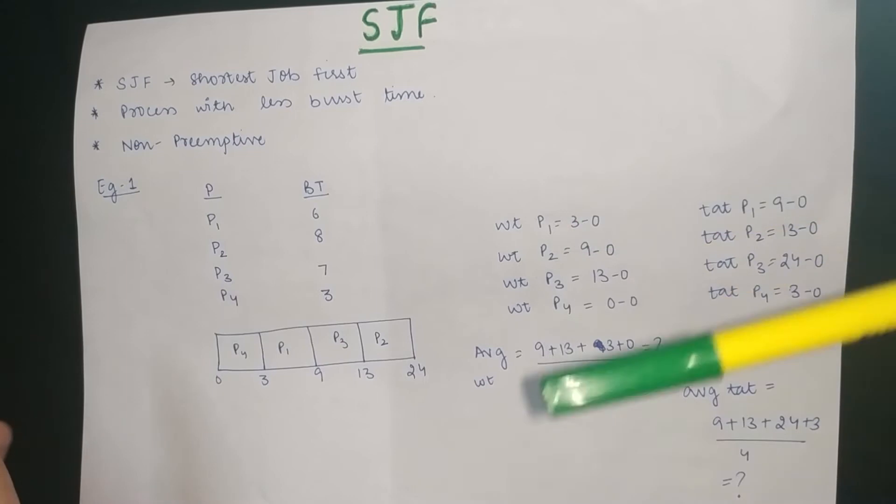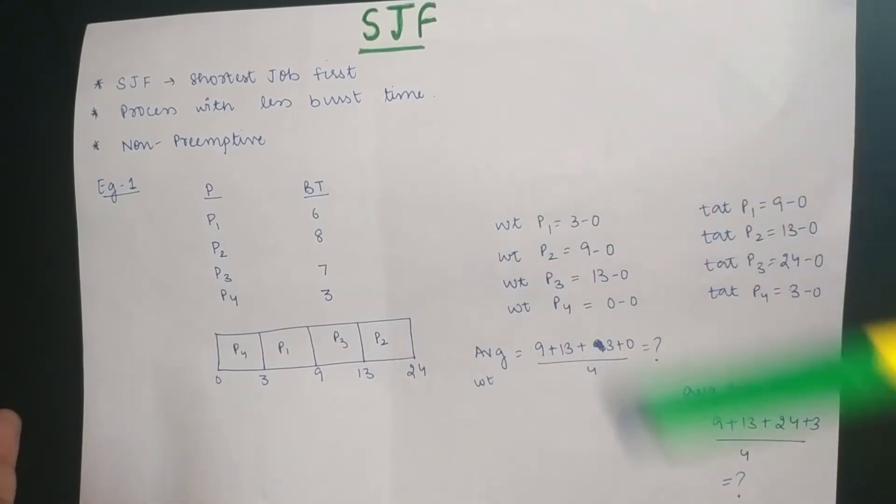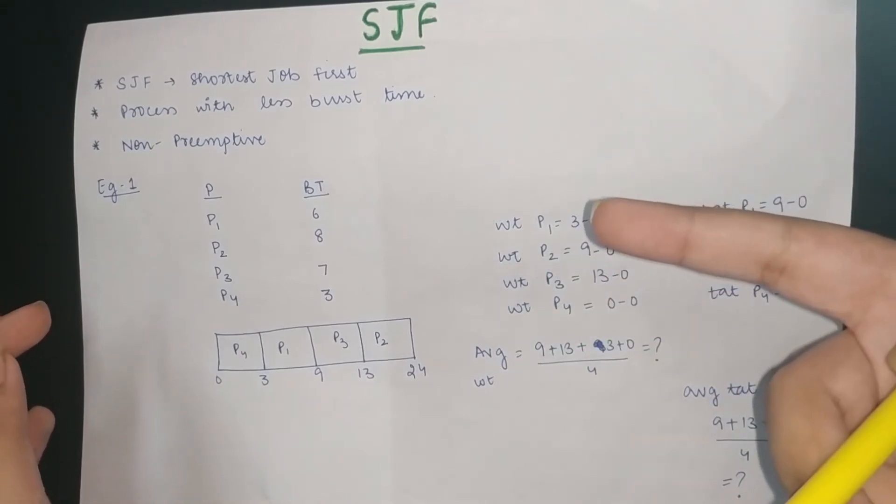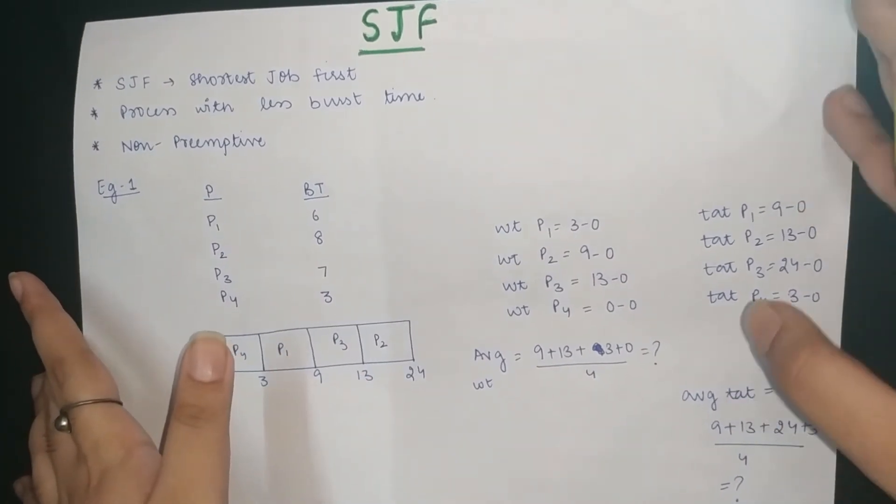In this case, the less execution time or the least burst time will complete its execution. And this is non-preemptive. It means that the CPU can't release the process.